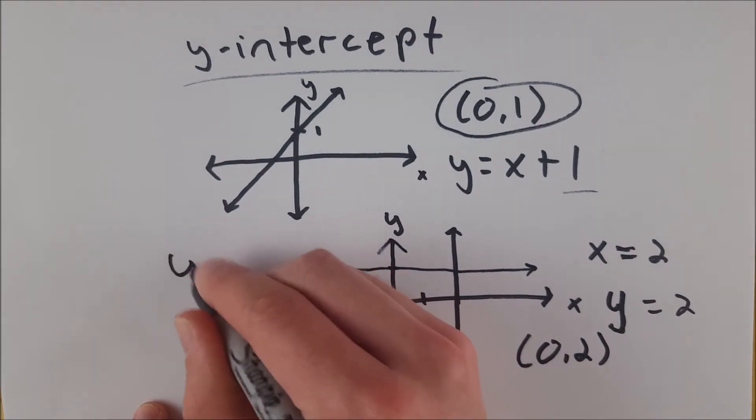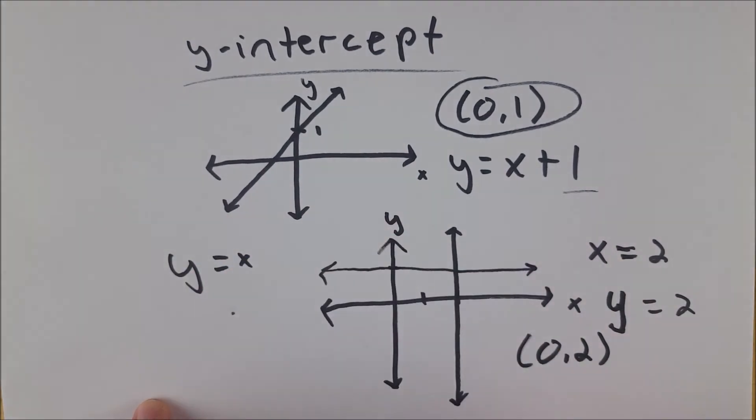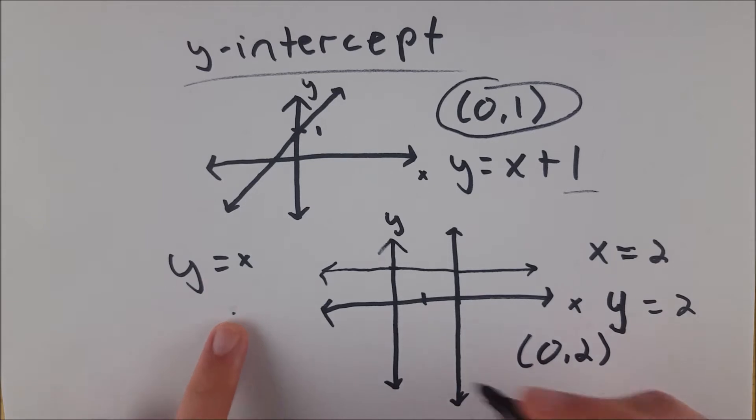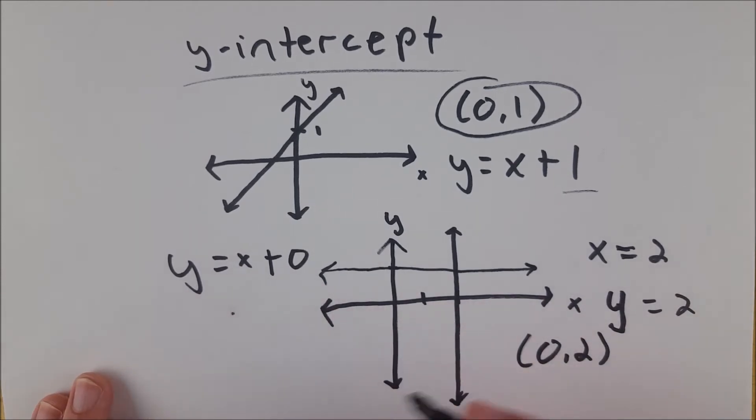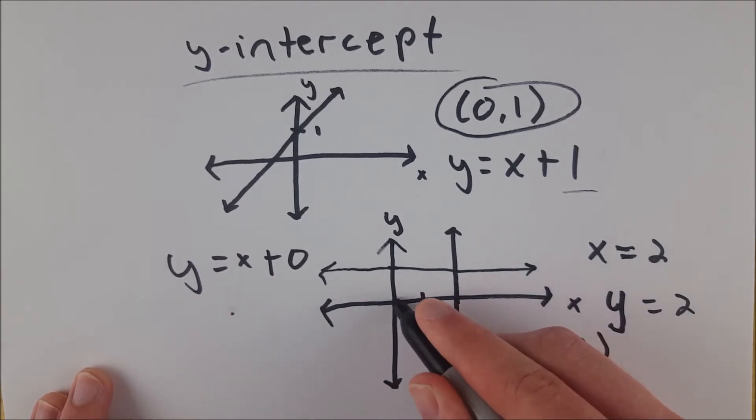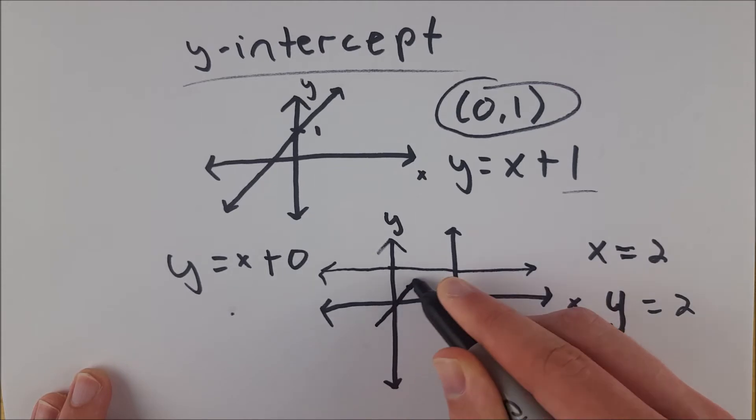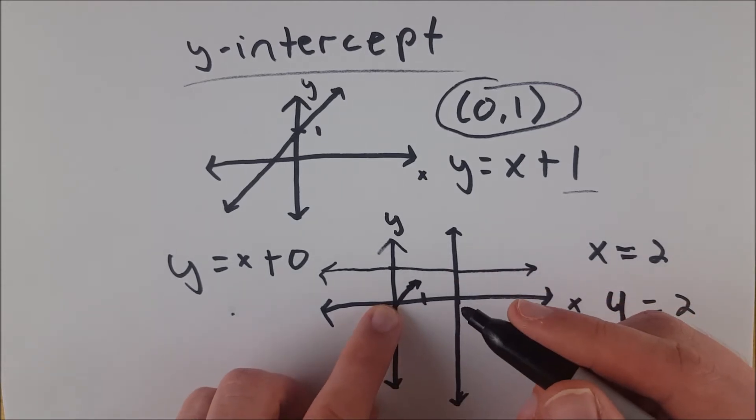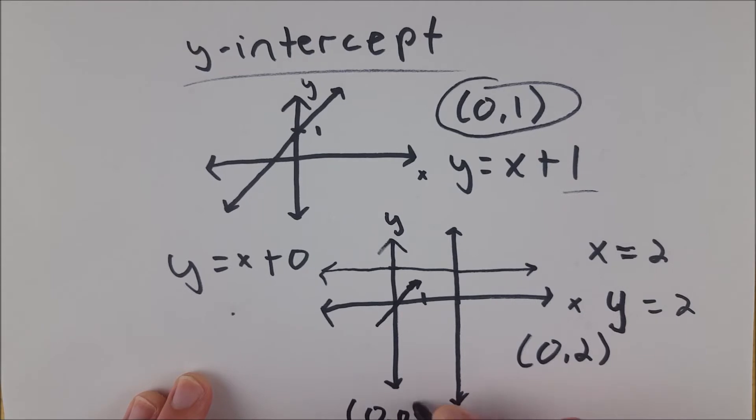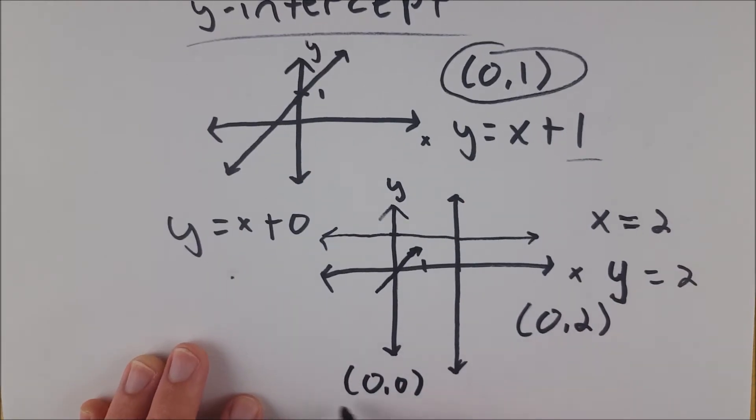For a line like y equals x, again, this is in slope-intercept form. And the y-intercept tacked on at the end is just a 0, since there's nothing there. So this line goes through the origin, right there, right through the center. And that is another possible y-intercept. That's just 0, 0. Again, every y-intercept has an x-coordinate of 0, like you see here.